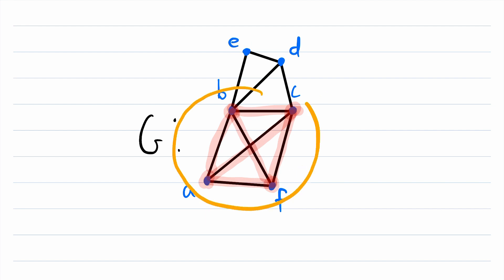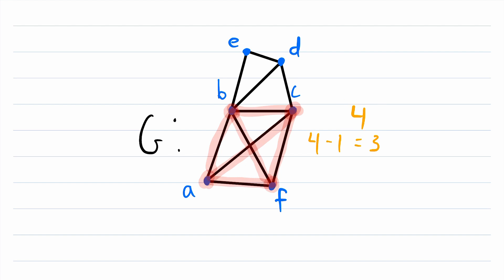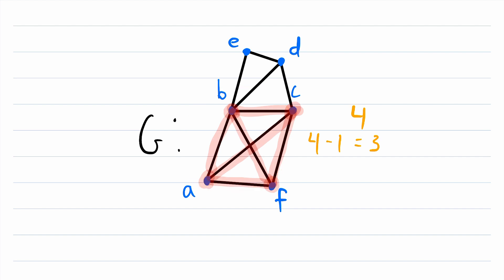There's also a handy test we could use to verify that this is a maximal clique — in some cases this test could be quicker. First, we have to note how many vertices are in our clique; in this case there are four. Since there are four vertices in our clique, every vertex in the clique has to have a degree of three or greater. This is because if a vertex in the clique has a degree less than three, it can't possibly be adjacent to the other three vertices in the clique, and therefore it wouldn't be a clique. So we check to see if any vertex in the clique has exactly that minimum degree of three.